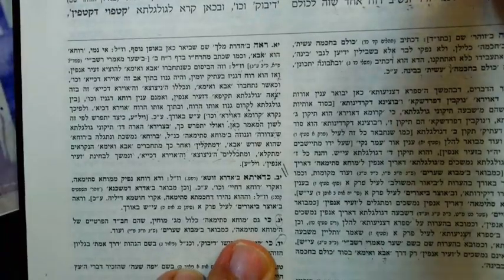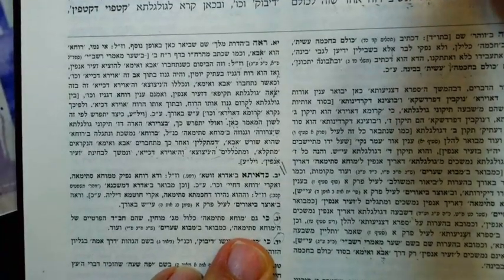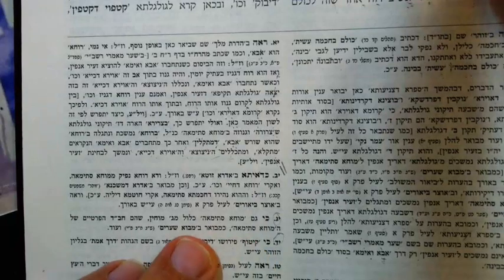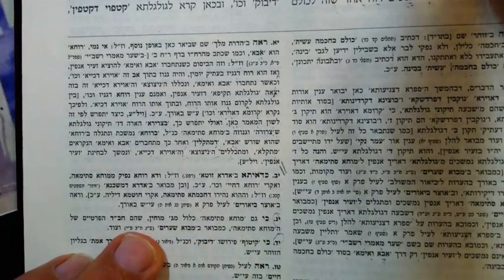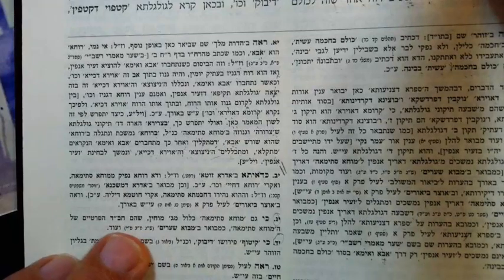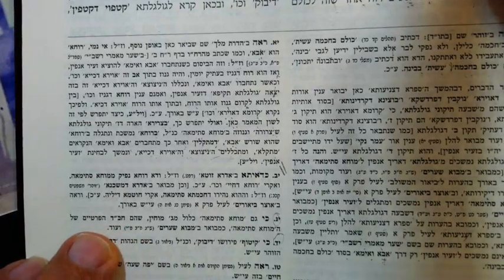So let's look at number Yud Gimel way down, and he says — it's very short — because even the Mocha Stimaa has three Mocha Stimaa within it, which is the Chabad — which is the same idea that we have in the Yud Kei Vov.